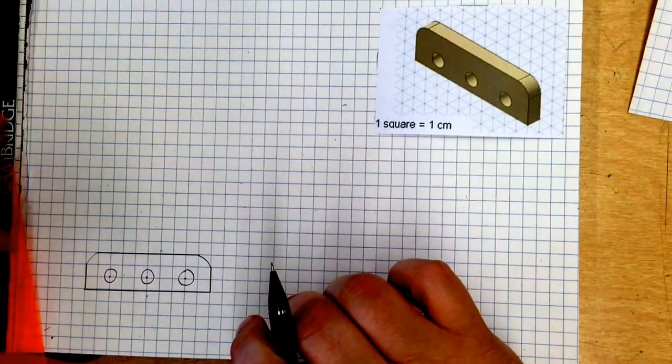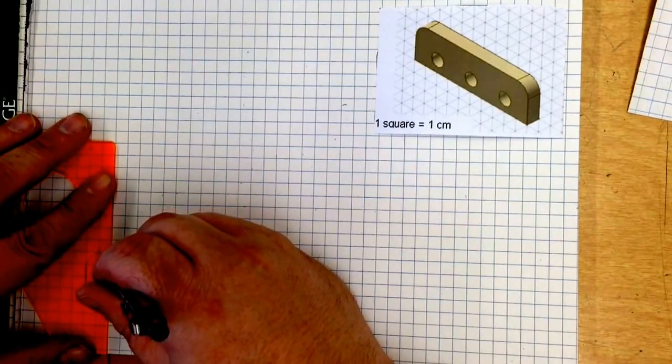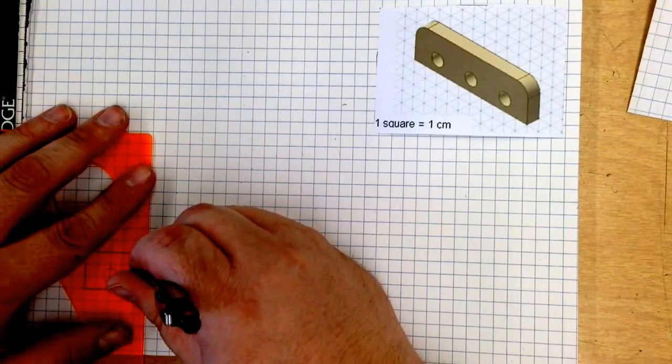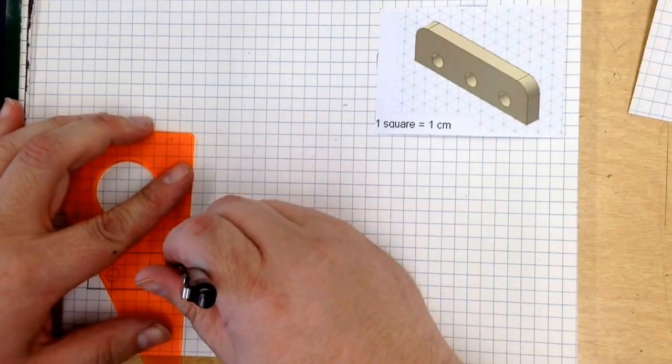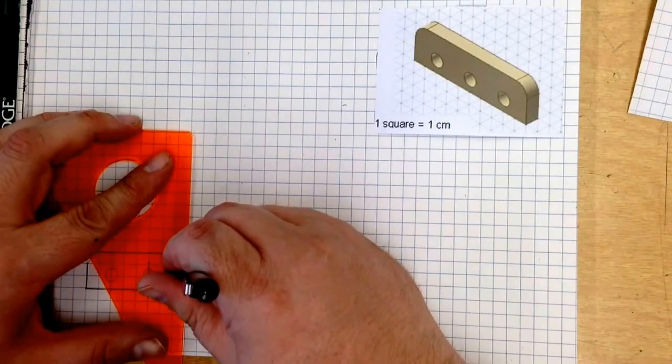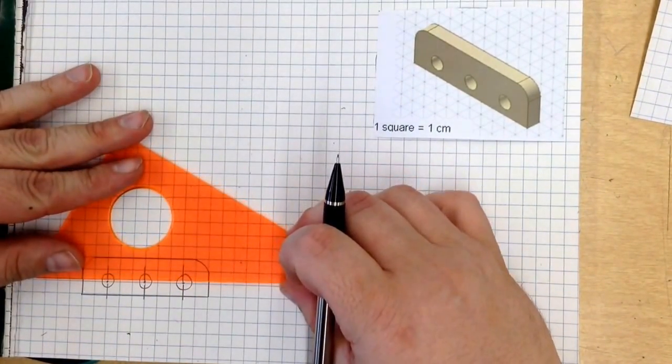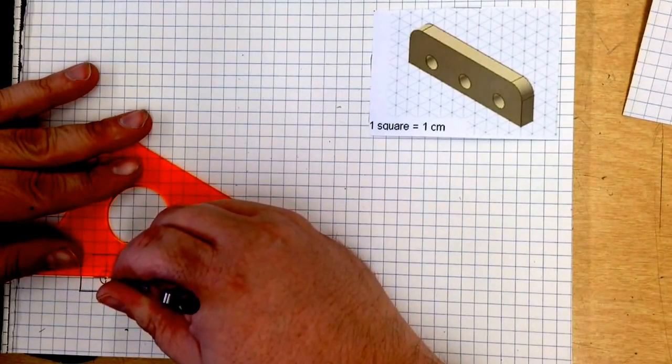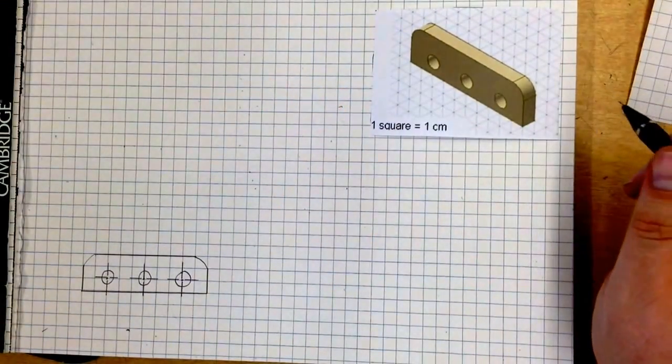Cool. Now remember when you are doing a front view like this, when there is a hole, you always need to make a center mark. That is part of the drawing rules that just lets everybody know that it is indeed a centered up hole. Even if your drawing is a little bit sloppy like mine. Okay so now we have that labeled.